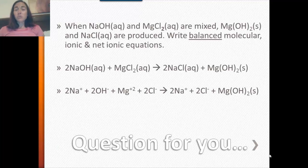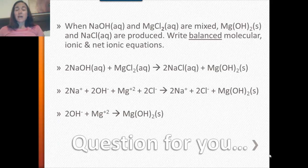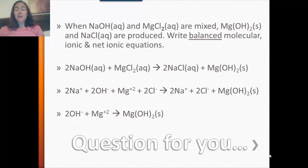So I have 2 sodium ions and 2 chloride ions on the product side. Magnesium hydroxide is my solid, or precipitate. Finding the spectators: there are 2 sodium ions on each side and 2 chloride ions on each side. Everything left is the net ionic equation — it makes sense: hydroxide plus magnesium gives magnesium hydroxide.